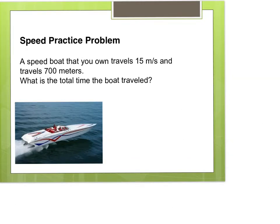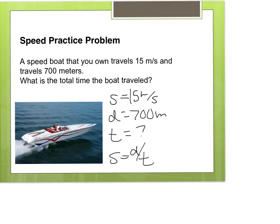A speed boat that you own travels 15 meters per second and travels 700 meters total. They gave us the speed, which is 15 meters per second. We traveled 700 meters, that's the distance. And they want to know what is the total time that you traveled. We know that speed is distance over time, so if we set up the equation, it would be 15 equals 700 divided by t.